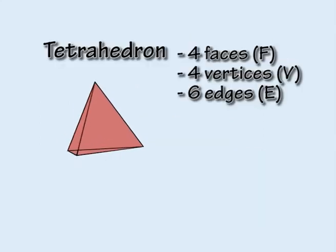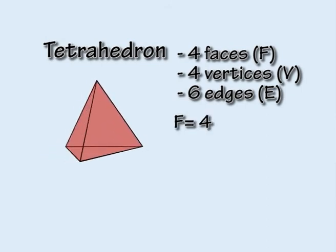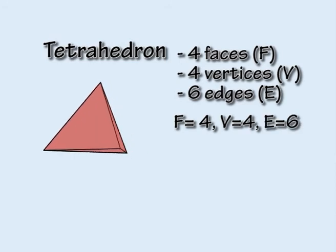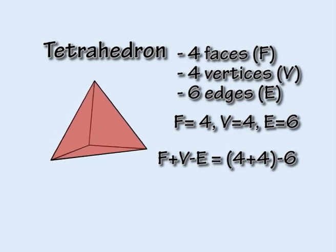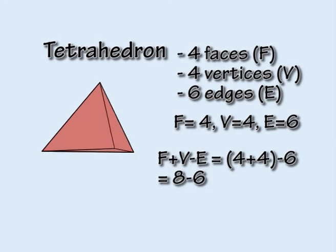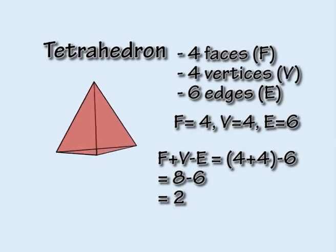For example, for the tetrahedron, F equals four, V equals four, and E equals six. So according to Euler's formula, F plus V minus E equals eight minus six, which equals two.